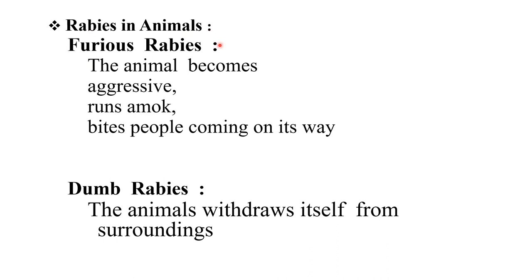Rabies in animals: in furious rabies, the animal becomes aggressive, runs amok and bites people in its way — a rabid dog may chase and bite unprovoked. In dumb rabies, the animal withdraws from surroundings and sits quietly without moving. People may mistake this for illness and approach to feed or pat the animal — we should be careful as the dog may be in this phase.